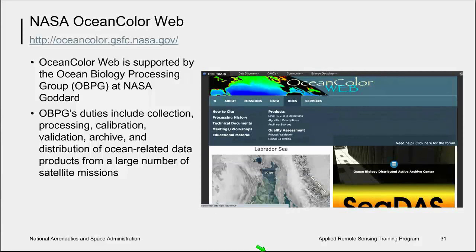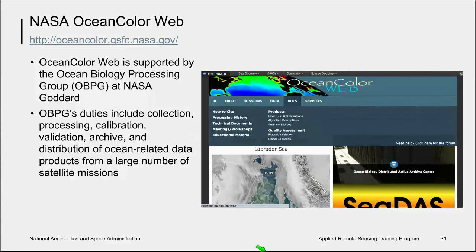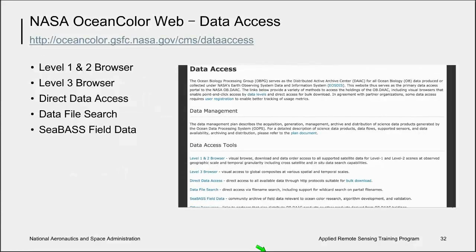The Ocean Color Web also provides documentation related to data products and calibration and validation, information from meetings and workshops, and other educational materials. In their services tab, you will find helpful links to the user forum, which you can register for — it's a very dynamic community of extremely helpful people — and their image processing software CDAS. This website provides a wealth of helpful information on becoming proficient at accessing, processing, and understanding ocean color satellite imagery, and I encourage you to explore the data access capability offered so that you may obtain data in a format and method that suits your needs.